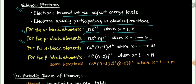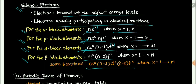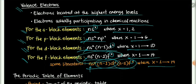For p-block elements, the valence electron configuration is ns2 npx, where x can be any integer from 1 to 6, and n is the highest occupied energy level. For d-block elements, it is ns2 (n-1)dx, where x can be 1 to 10. For f-block elements, there are two possible forms: ns2 (n-2)fx, or alternatively ns2 (n-1)d1 (n-2)fx, because the energy values of d and f orbitals are close enough to overlap. We will follow the ns2 (n-2)fx convention.